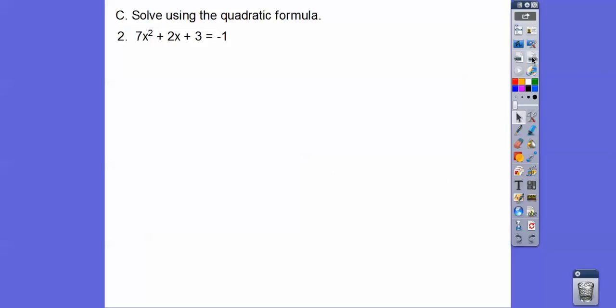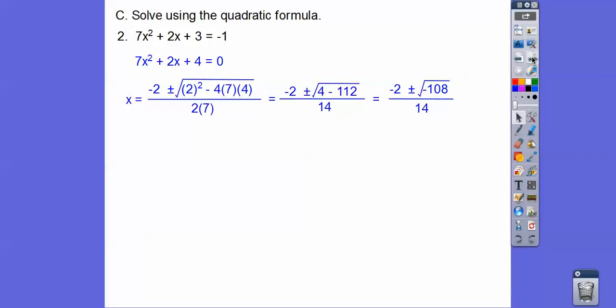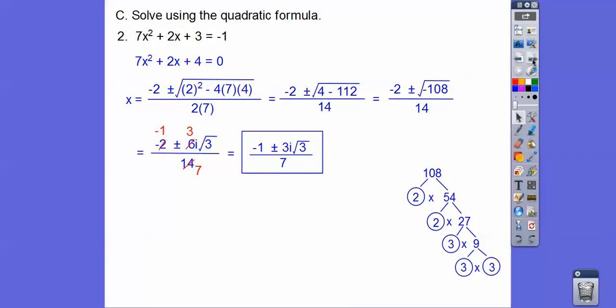So let's try one more here. So we're going to make it equal to 0 before we can use that quadratic formula right there. And if we crank it out, we get negative 108. 108, I broke it down over here. And there's an i involved right there. So we get 6i root 3. And then, again, 2 goes into that once, into that 3 times, into that 7 times. So that will leave us with that answer right there.